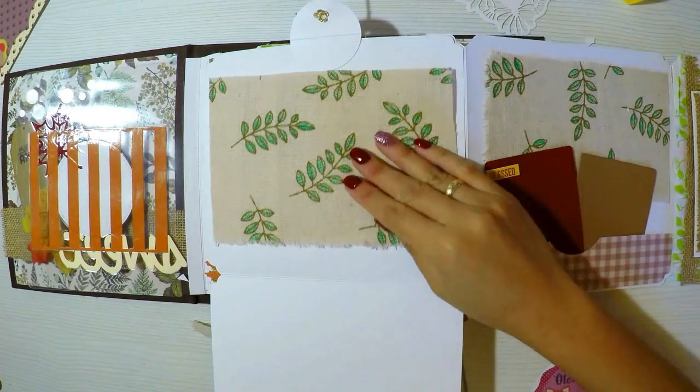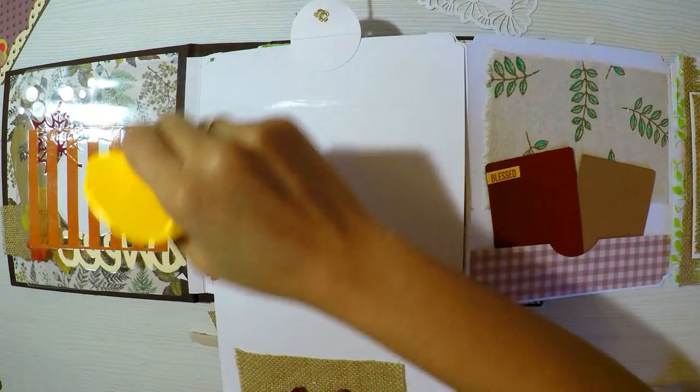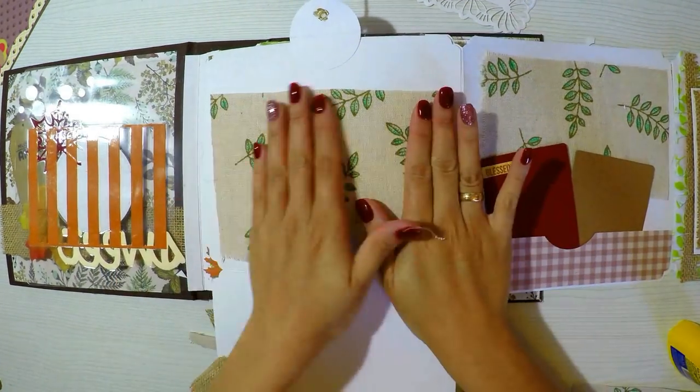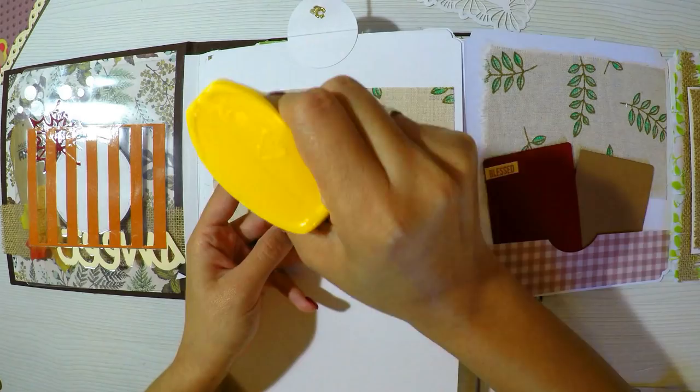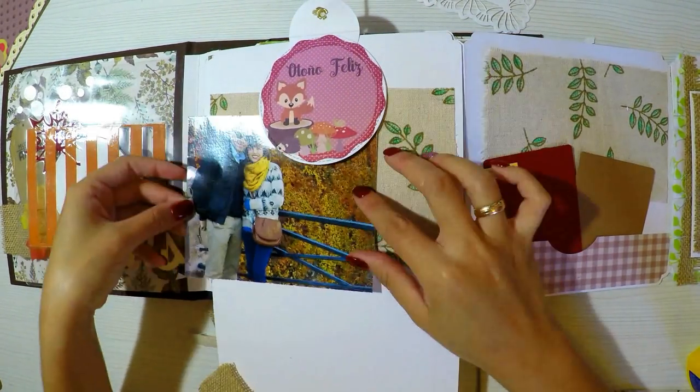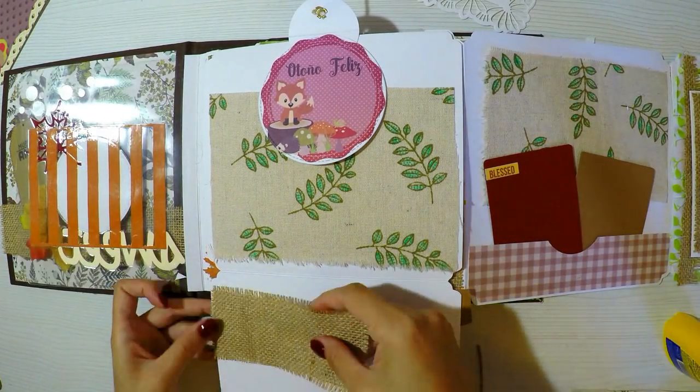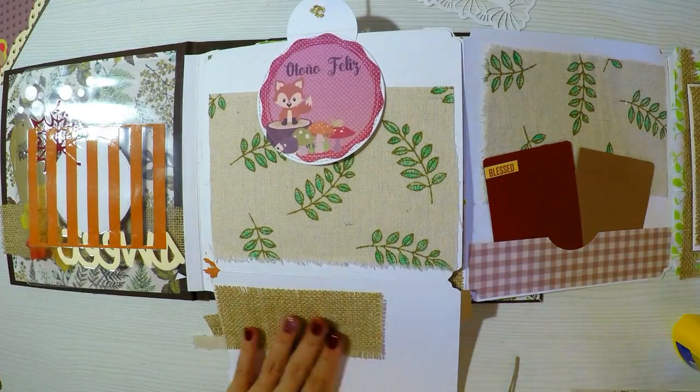Cuando coloquemos todas las fotos quedará preciosísimo. Sobre todo cuando cortemos las fotos perfectamente al marquito del Polaroid va a quedar súper bonito. Y me encanta el efecto de la tela con el papel, con los printables, con los bolsillitos, con la tela de saco. Me parece súper bonito y muy otoñal.